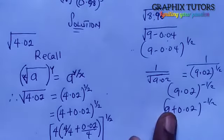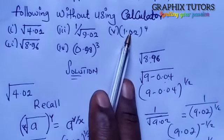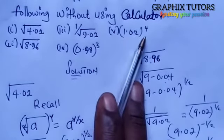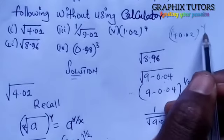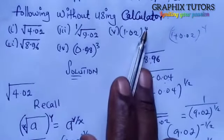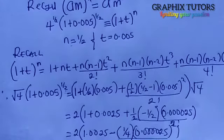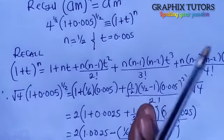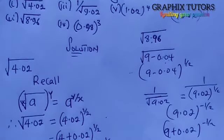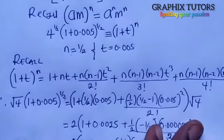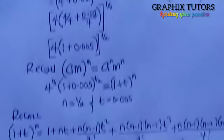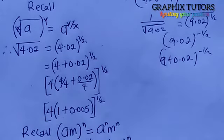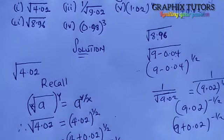For problem 5, 1.02^4: ask what you would add to 1 to get 1.02 — it is 0.02 — so write it as (1 + 0.02)^4. Since the power is 4, take 5 terms in the expansion (1, 2, 3, 4, 5). Similarly for problem 4, 0.98^3: the power is 3, so take 4 terms. The key rule is: the leading term inside the bracket must always be 1.